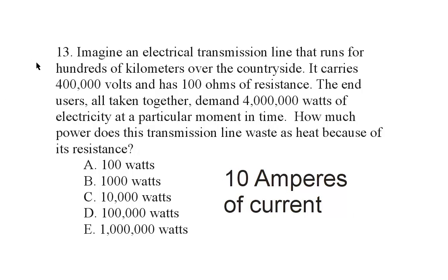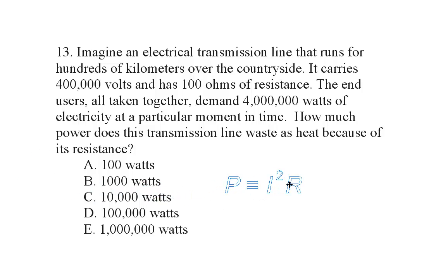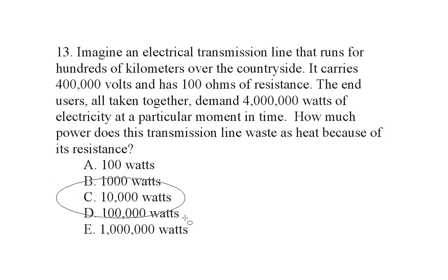That is an awfully low current for a 400,000 volt line, but this is a rather unusual example — maybe it is a holiday and nobody is using much electricity. With 10 amperes of current and 100 ohms of resistance, we can use the formula P = I² × R to find the power loss. The current squared — 10 amps squared is 100 — times 100 ohms equals 10,000 watts of power being wasted in this transmission line, presumably as heat.